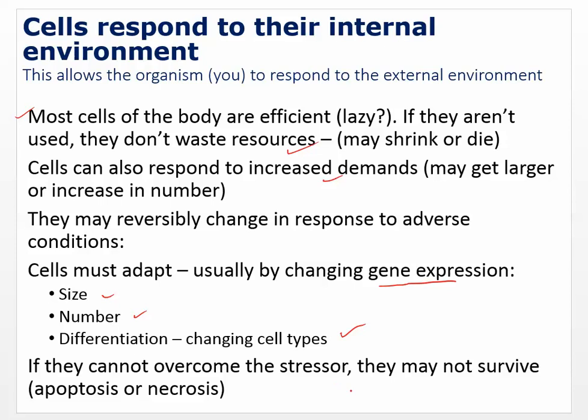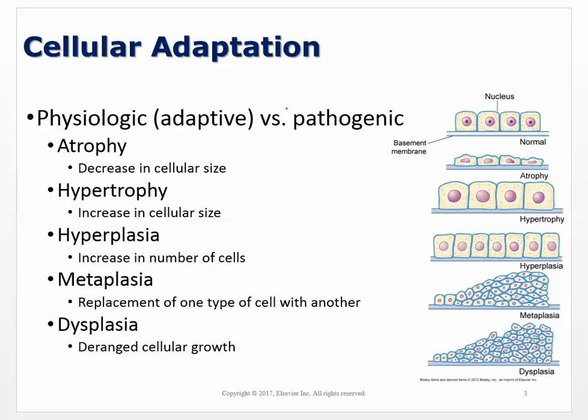So these are the cellular adaptations we'll cover. Atrophy is a decrease in size. Hypertrophy is an increase in cell size. Hyperplasia is an increase in cell numbers — note the difference between hypertrophy, which is an increase in size, and hyperplasia, which is an increase in numbers. Metaplasia is a replacement of one cell type with another. Dysplasia is deranged cellular growth, where we start to lose control of cell identity.